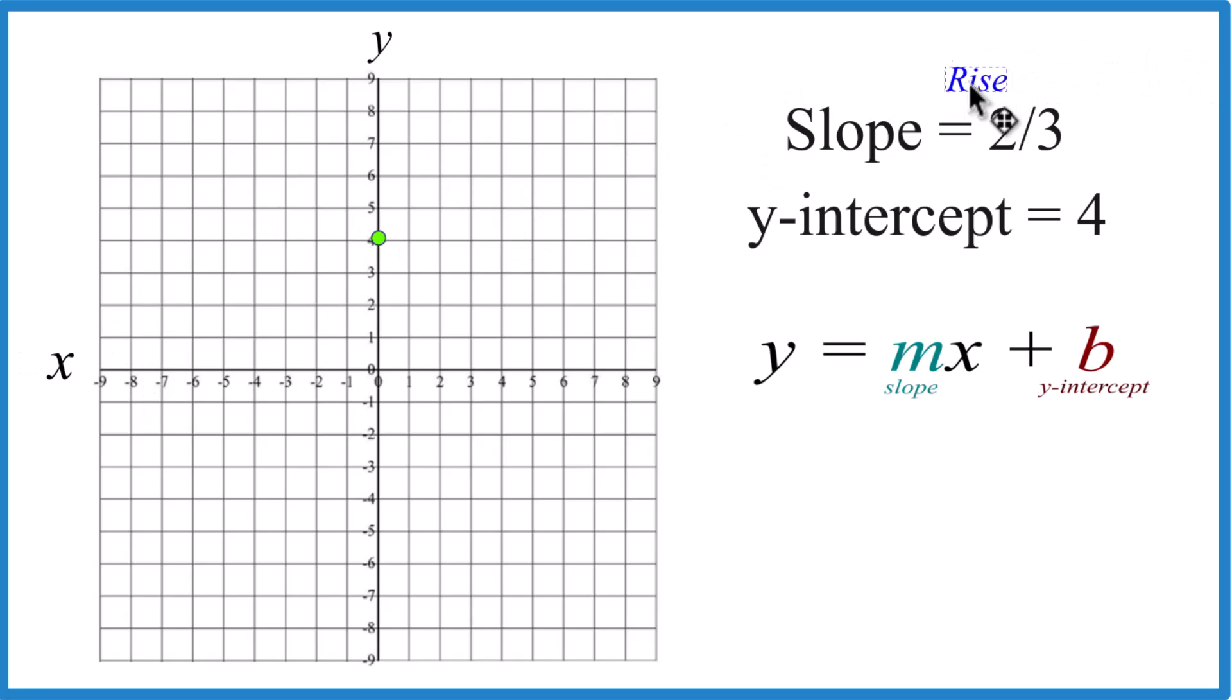For the slope two-thirds, think of it as rise over run. So we rise one, two, and we go to the right, we run one, two, three.